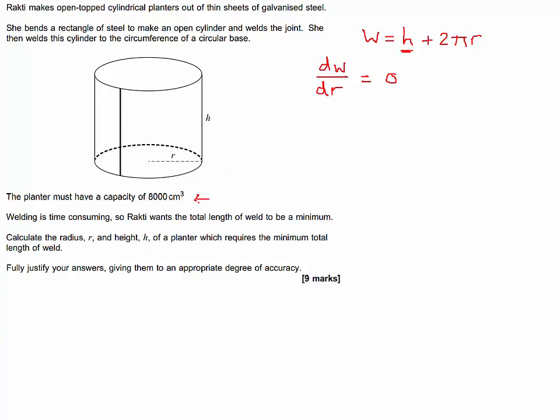To do this we've been provided with the capacity or volume here, so we can use the volume formula, which is the area of the cross-section circle times the height. That equals 8000, so that tells us then that H equals 8000 over pi R squared.